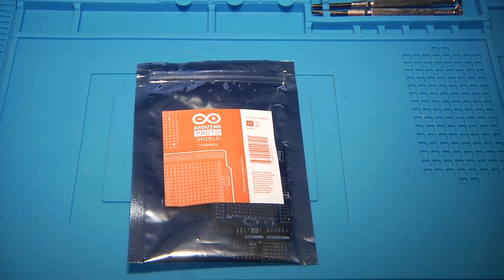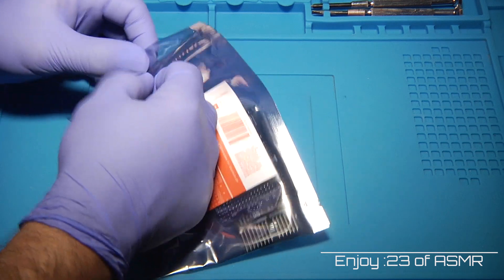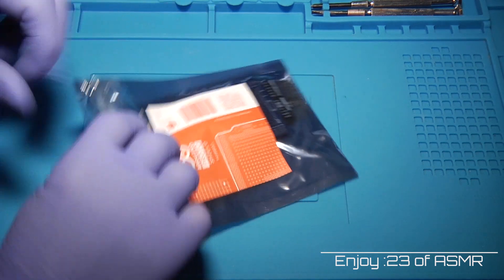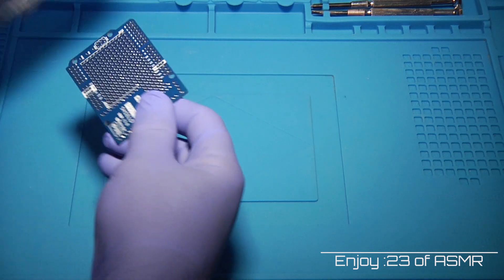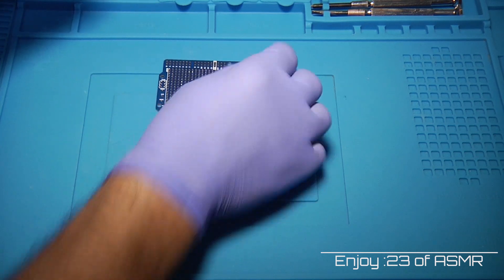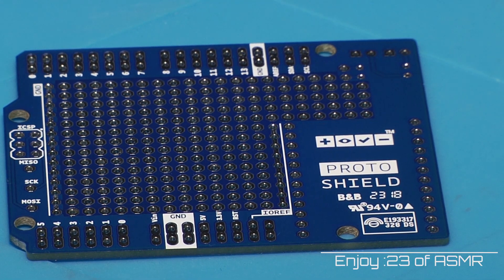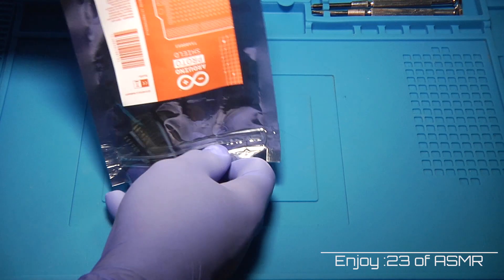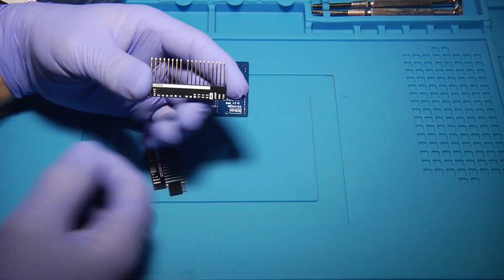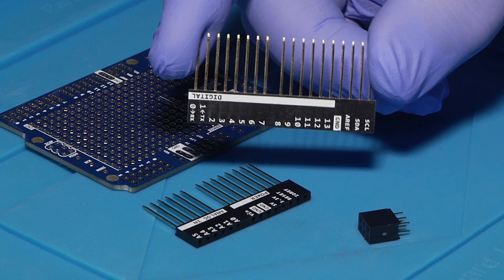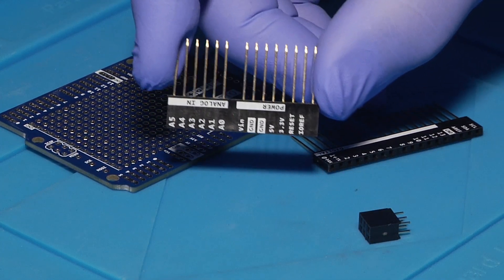It comes unassembled so you'll have to solder the pins on. Here's the kit: a PCB board, female header pins. The nice thing is, they come labeled just like an Arduino Uno.